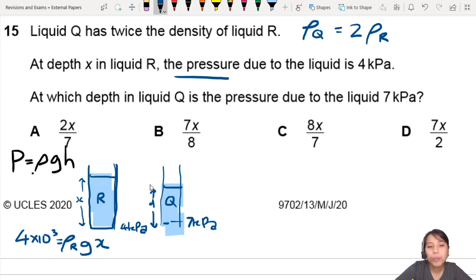The second equation is for Q. For this one, 7 kilopascals equals the density of Q, G, and I don't know what this is, but this is D. I'm trying to find D, D for depth.